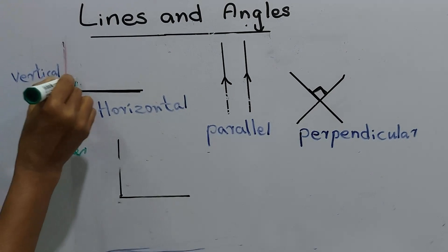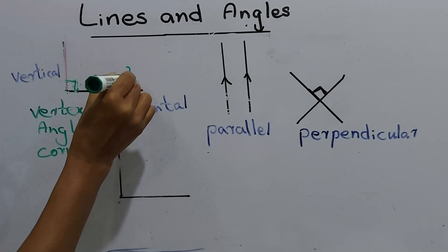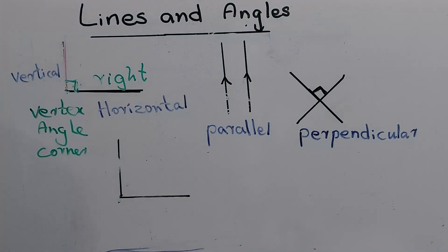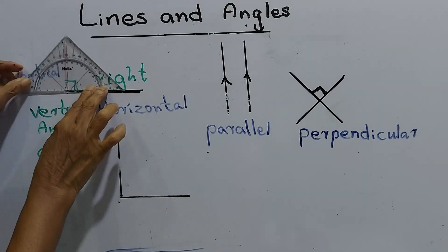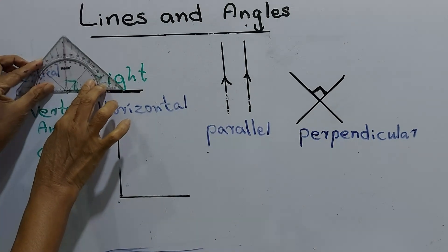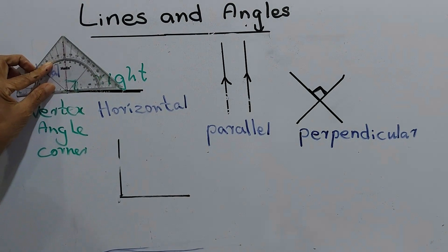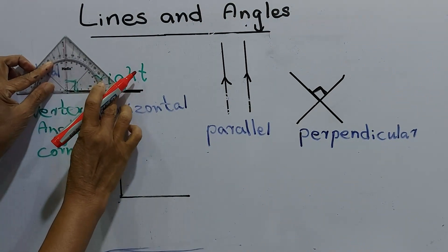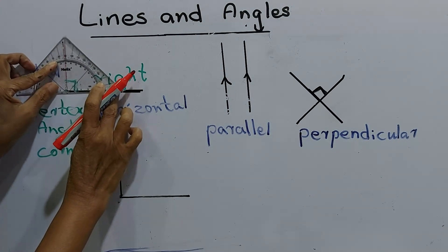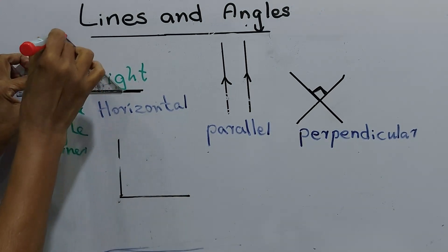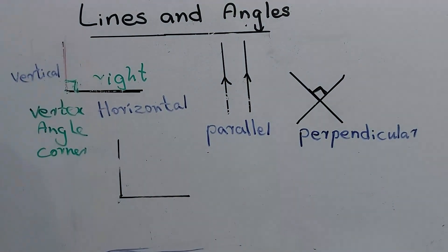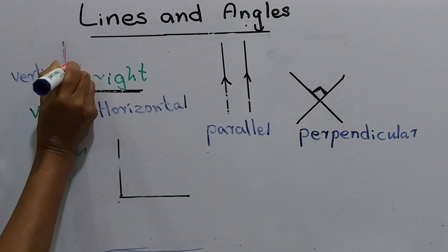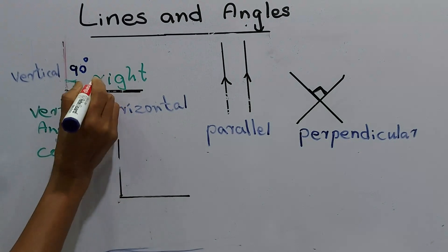This is called a right angle. We can measure it using the protractor. Keep the protractor on the horizontal line and we can measure the angle. When we keep the bottom line of the protractor on the horizontal line, it tells us the value of this angle is 90 degrees — it's a right angle.